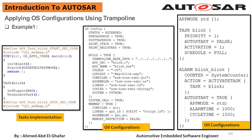We configure here an alarm called Blink-Blink. As we know from the previous lecture, an alarm is a counter-based mechanism to provide services to activate tasks, set events, or call specific routines when the alarm expires. The RTOS always offers a counter derived from a hardware timer, and this counter is known as the system counter.